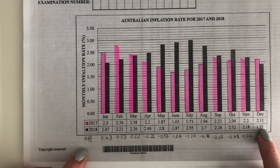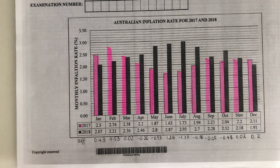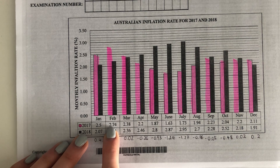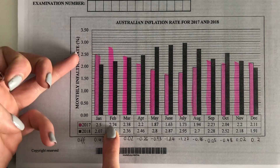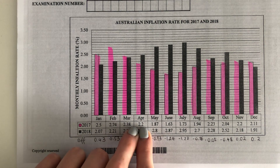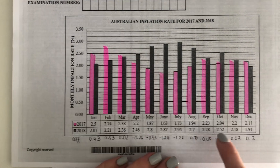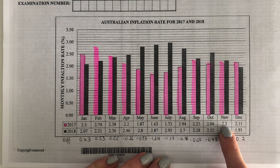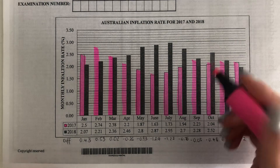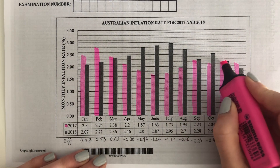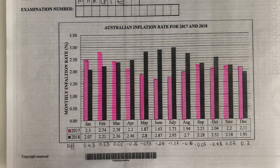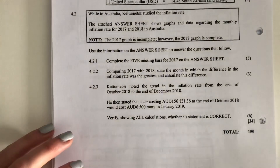All of these numbers are the ones you need to plot. The 2018 bars have already been plotted completely, so we only need to look at 2017. Plot 2.74 — go halfway between those two numbers, plot a point, and draw a bar down. Then for March plot 2.38, April 2.2, September 2.23, and November 2.2. Use a ruler to make sure the top of each bar is flat.